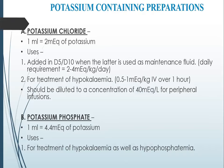Coming to the potassium-containing preparations, the commonly available ones are potassium chloride and potassium phosphate. 1 ml of potassium chloride contains 2 milliequivalents of potassium. It is used as an additive in dextrose 5% and dextrose 10% when these fluids are used as maintenance fluids. The daily requirement of potassium is 2 to 4 milliequivalents per kg per day. Potassium chloride is also used for the treatment of hypokalemia at a dose of 0.5 to 1 milliequivalent per kg IV over 1 hour.